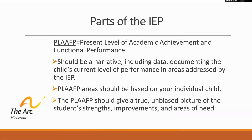Part of the IEP is the Present Level of Academic Achievement and Functional Performance. This should be a narrative including data documenting the child's current level, performance, and areas addressed by the IEP. The present level of academic achievement should be based on the individual child only, and should give a true, unbiased picture of a student's strengths, improvements, and areas of need. It should not be biased.